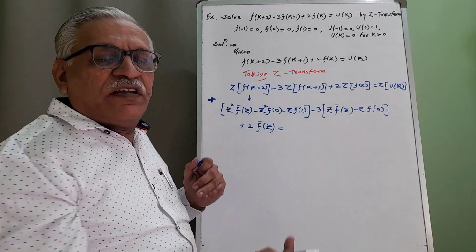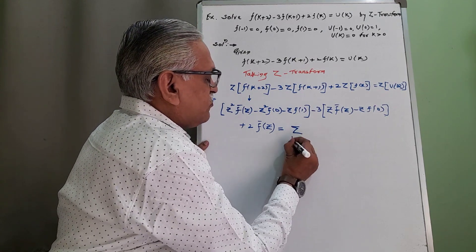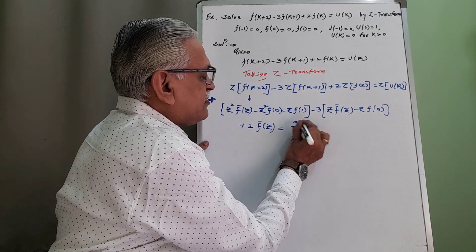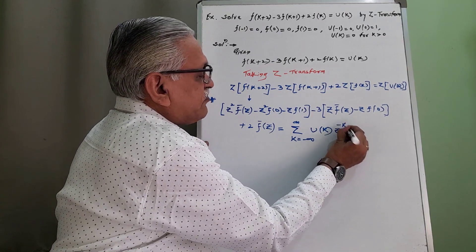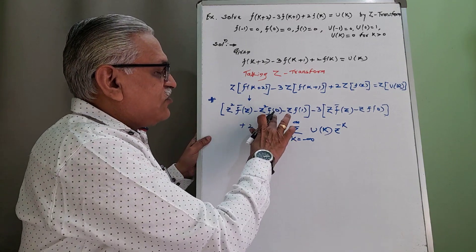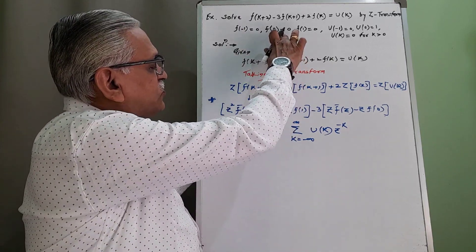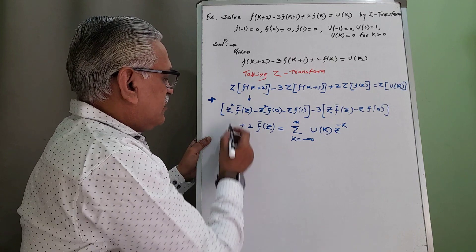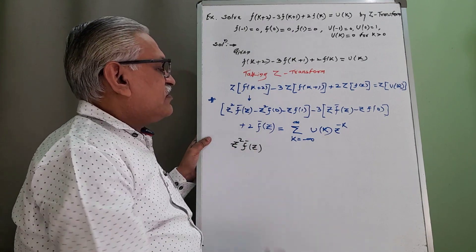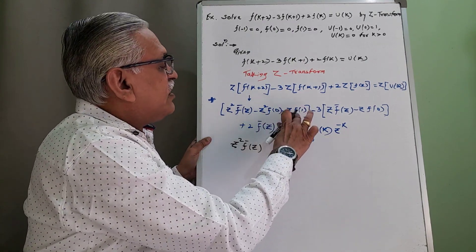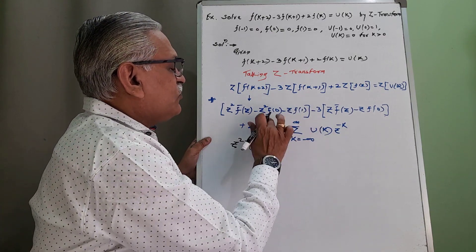Since values exist for negative as well as positive k, we use the standard definition summing u(k)·Z^(−k) from k=−∞ to +∞. Substituting the values of f(0) and f(1): f(0)=0, so that term becomes 0. We have Z²·F̄(Z). The f(1) term is also 0, so both those terms become 0.